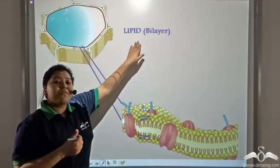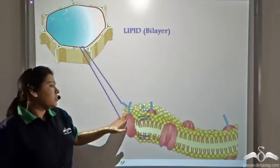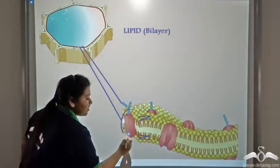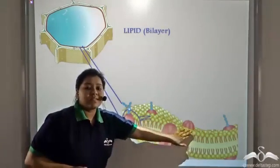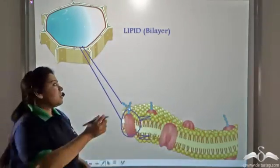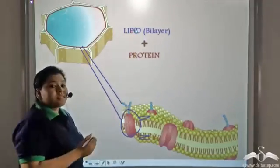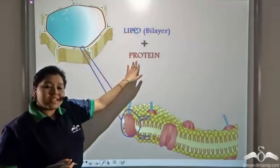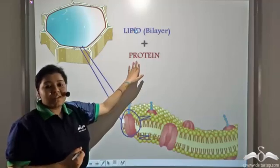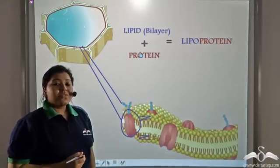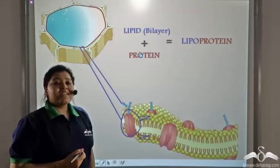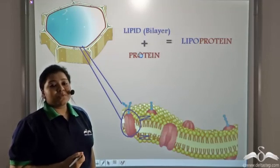And then, you see these large pink structures that are present at regular intervals. These structures are known as proteins. So, lipids and proteins together form a structure known as the lipoprotein. So, the cell membrane is made up of these lipoproteins.